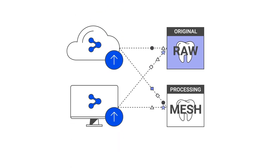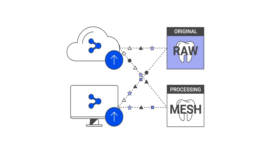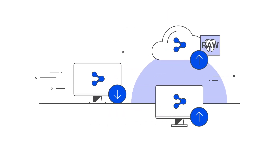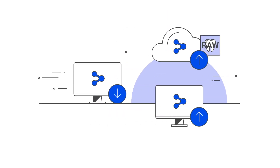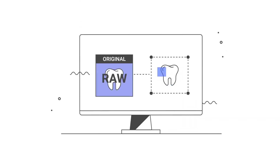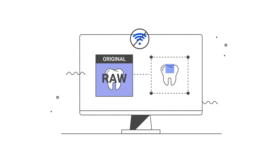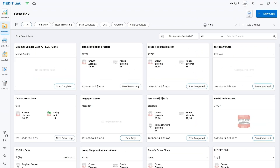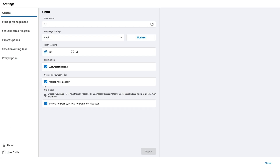Both the raw data and MeditMesh data are automatically saved to the cloud storage and your local PC. Raw data synchronized with the MeditLink cloud storage can be downloaded onto a different PC. Since it's the original scan data, you can perform additional scans and edit the scan data as you wish. If you have just one dedicated PC for scanning or if the local internet connection is poor, you can turn off the uploading raw scan files function in settings, and raw data will not be automatically saved to the cloud.